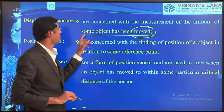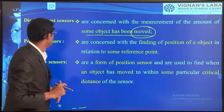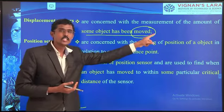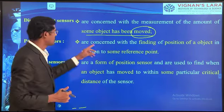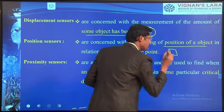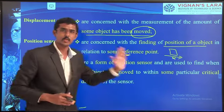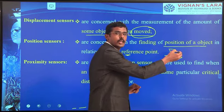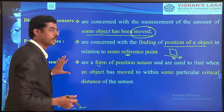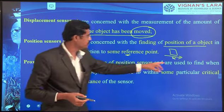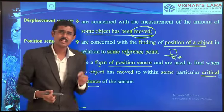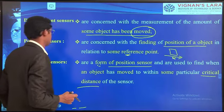Position sensors identify where the object is — whether it has moved or not, and how much it has moved — concerned with finding the position of an object in relation to some reference point. Whether it crosses or not crosses that reference point. Proximity sensors are also a form of position sensors, used to detect when an object moves within specific critical situations, identifying small micro-level adjustments.